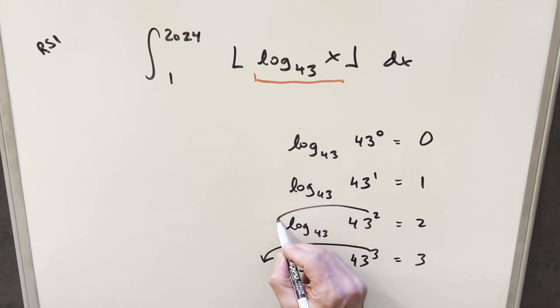And then when we do that, we just have log base 43 of 43 is 1. So of course, in each of these, we have the exponents. We have these nice integer values.